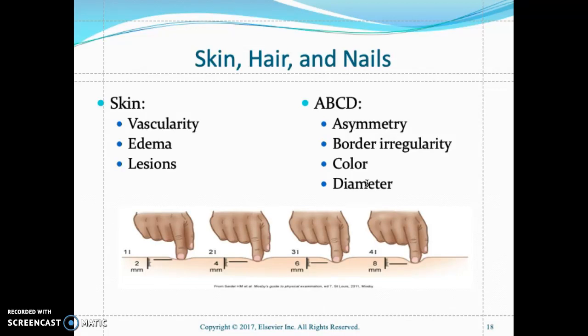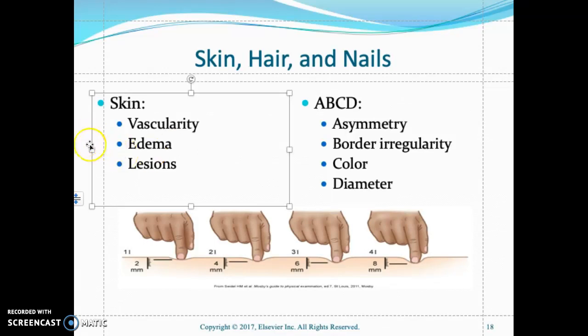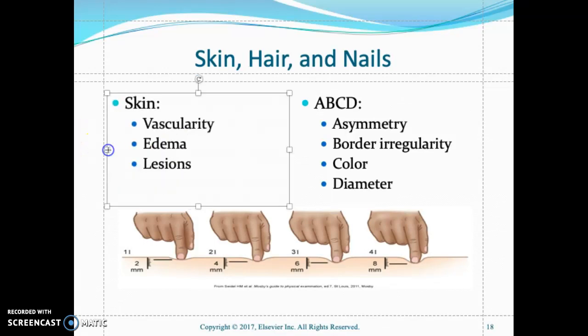For color, look for hyperpigmentation, blue, black, or brown. For diameter, check if it is greater than six centimeters. For edema, it tells you if the patient has fluid overload — with CHF patients you will get pitting edema. Assess pitting edema on a scale of plus one to plus four, and look for any open lesions.